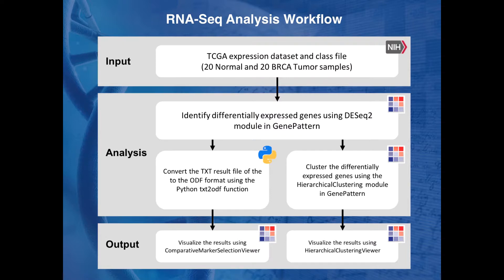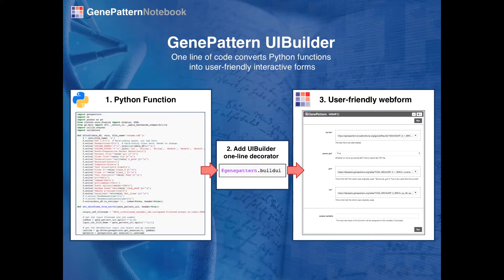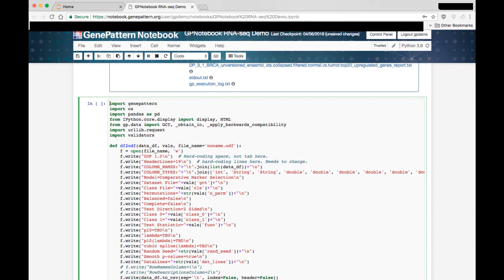To demonstrate the use of GenePattern results in Python, we'll convert the TXT results from our DESeq2 analysis into an ODF formatted matrix of data. This will allow us to view our analysis results in an interactive viewer which requires data to be in an ODF format. We could just run this as raw code in our notebook, as you would in any Jupyter Notebook, or we can wrap our function as a user-friendly web form using the GenePattern UI Builder.